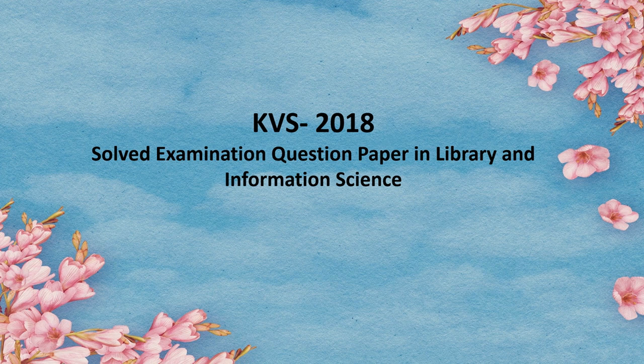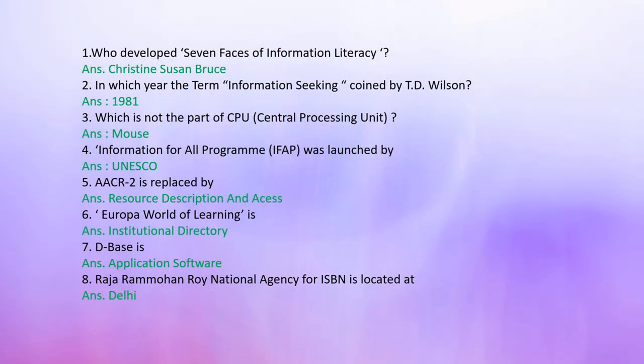Now, KVS 2018 short examination questions paper in Library and Information Science. Question 1: Who developed the Seven Phases of Information Literacy? Answer: Christine Susan Bruce. Question 2: In which year was the term 'information seeking' coined by T.D. Wilson? Answer: 1981.